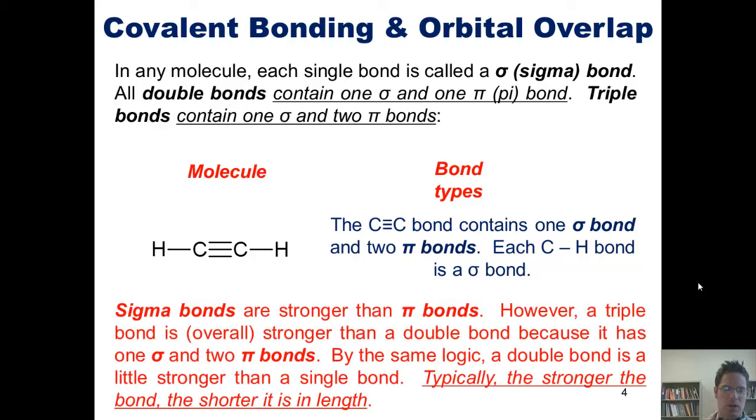Sigma bonds are stronger than pi bonds. However, a triple bond is overall stronger than a double bond, because it has one sigma and two pi bonds. By the same logic, a double bond is a little stronger than a single bond, because it contains one sigma and a pi bond. Typically, the stronger the bond, the shorter it is in length. Hence, single bonds are longer than double bonds, which are longer than triple bonds.